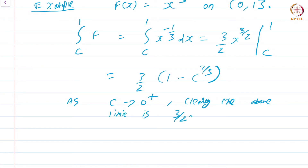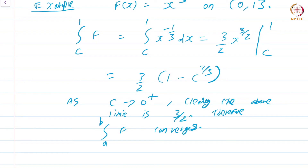Therefore, the integral from A to B of f converges. The improper integral of x^(−1/3) on the interval (0, 1] exists; it converges and the value of the integral is 3/2.